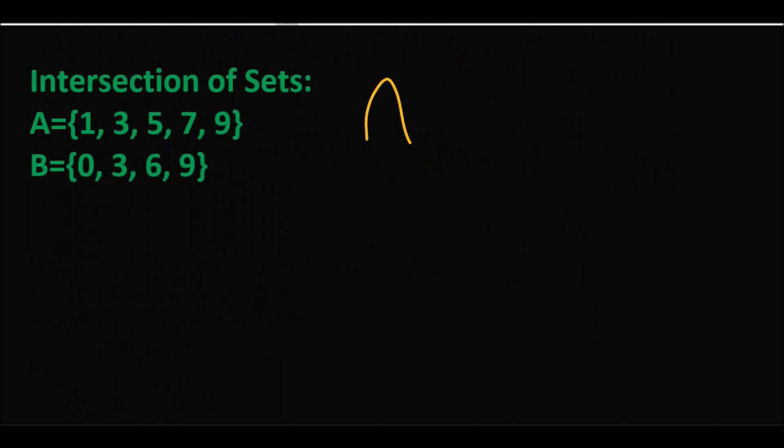اس کے بعد ہمارے پاس آتا ہے intersection of a set۔ Intersection of a set کا ایک symbol ہوتا ہے۔ Intersection of a set میں basically ہمارے پاس جو common elements ہوتے ہیں دونوں sets میں، ان کو ہم ایک set میں لکھتے ہیں۔ اس کو ہم کہتے ہیں کہ یہ دو sets کا intersection ہے۔